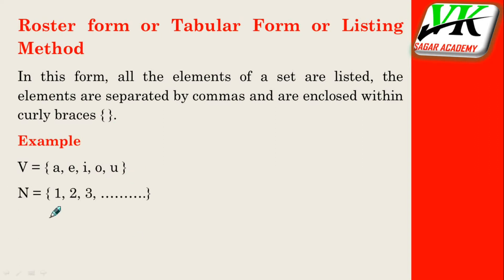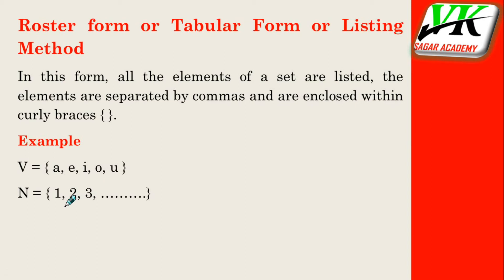ऐसे ही आप यह देखें कि natural numbers का set है: 1, 2, 3 — क्योंकि natural numbers बहुत होते हैं, हम सभी नहीं दिखा सकते, तो 3-4 elements दिखा देते हैं और उसके बाद dot dot dot लगा दिए जाते हैं। जो finite set है, जिनके elements कम होते हैं, वो सारे दिखाये जाते हैं। But when the elements are very large, we show some elements and represent the rest with dots.